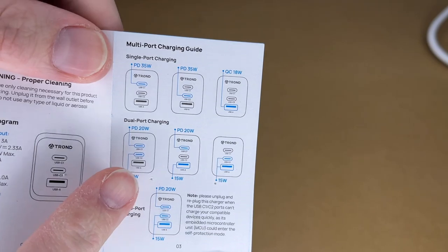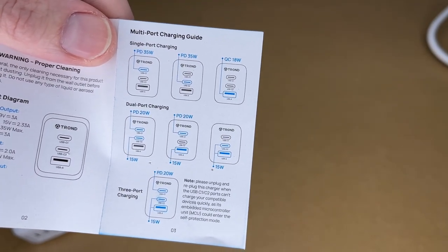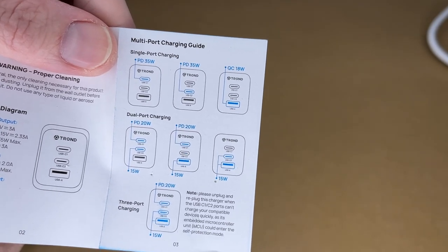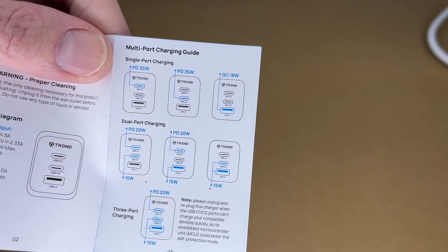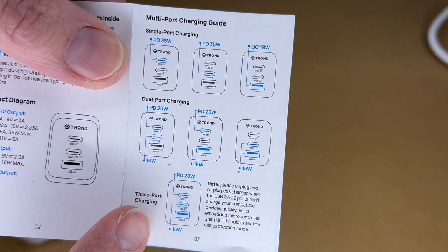This is going to show you how much charging you get depending on which ports you use. Either of the USB-C ports is going to have PD 35 watt max charging when you're using only one port on the charger. And then the USB-A will have quick charge 18 watts max charge if you're only using the USB-A port. Now if you're using multiple ports it shows how that breaks down here.